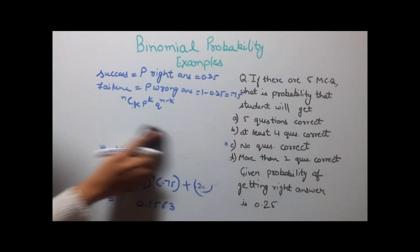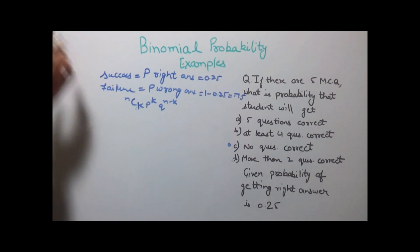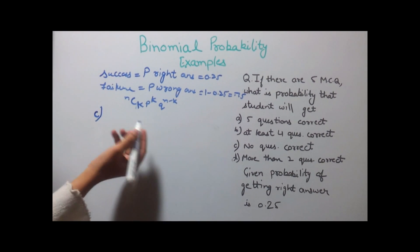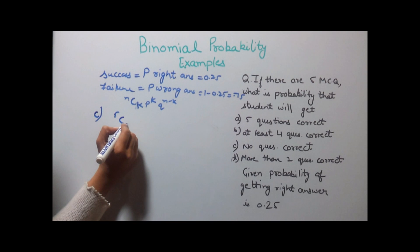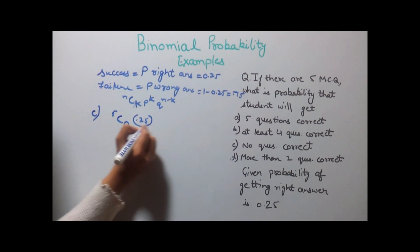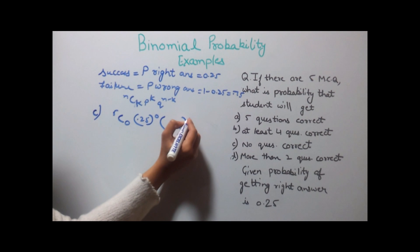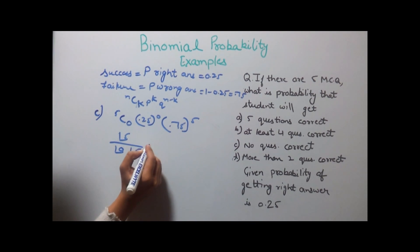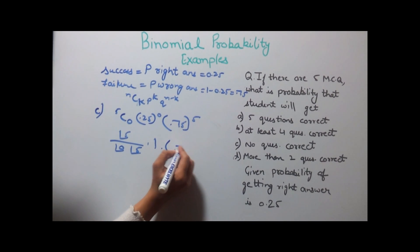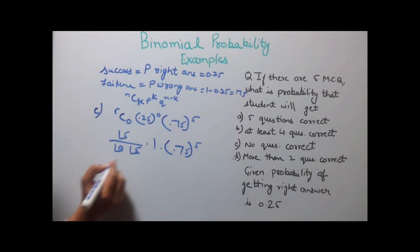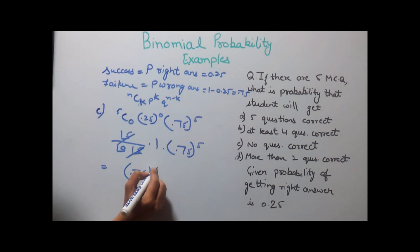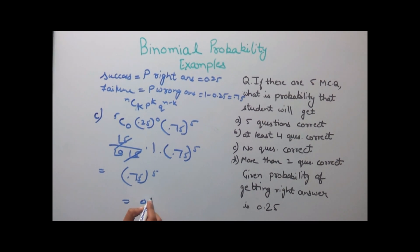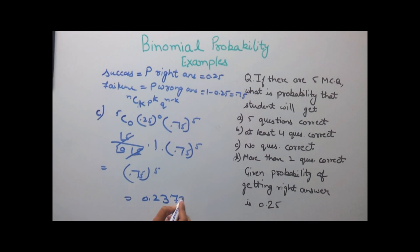Remember that while doing these questions the value of k will change; other values will remain the same. In part C, no question is correct, so here k will be 0. We get 5C0 times 0.25 to the power 0 into 0.75 to the power 5. Cancelling, we get 0.75 to the power 5, and the final answer is 0.23730.